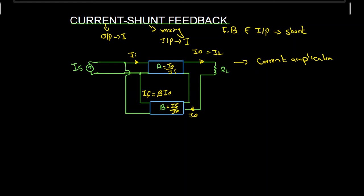Shunt mixing is also called current mixing. In the current shunt feedback amplifier, all signals are current signals — both at the input and at the output. Thank you.